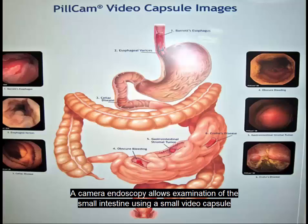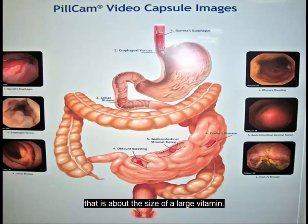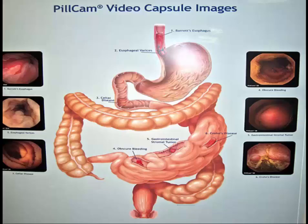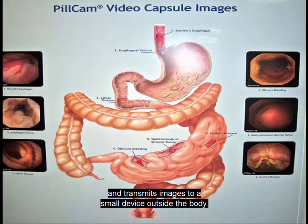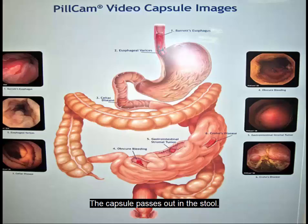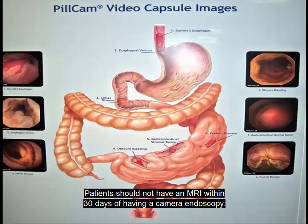A camera endoscopy allows examination of the small intestine using a small video capsule about the size of a large vitamin. The camera captures pictures as it travels naturally through the small intestine and transmits images to a small device outside the body. After the procedure is completed, the images can be downloaded and reviewed by the physician. The capsule passes out in the stool. Patients should not have an MRI within 30 days of having a camera endoscopy.